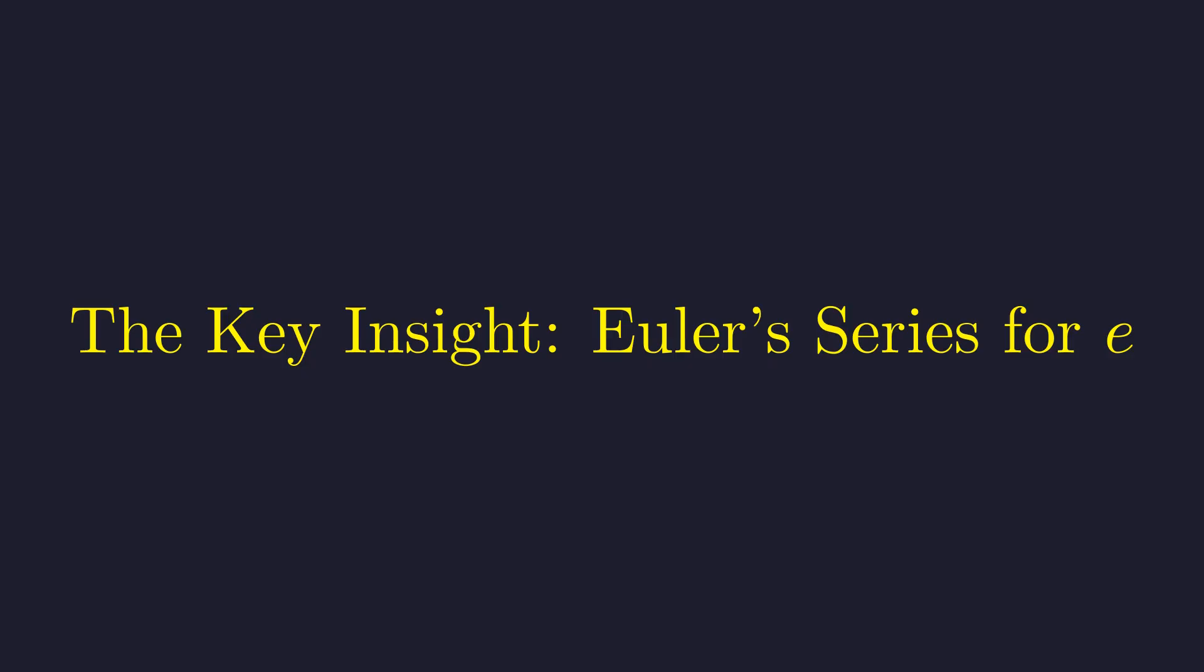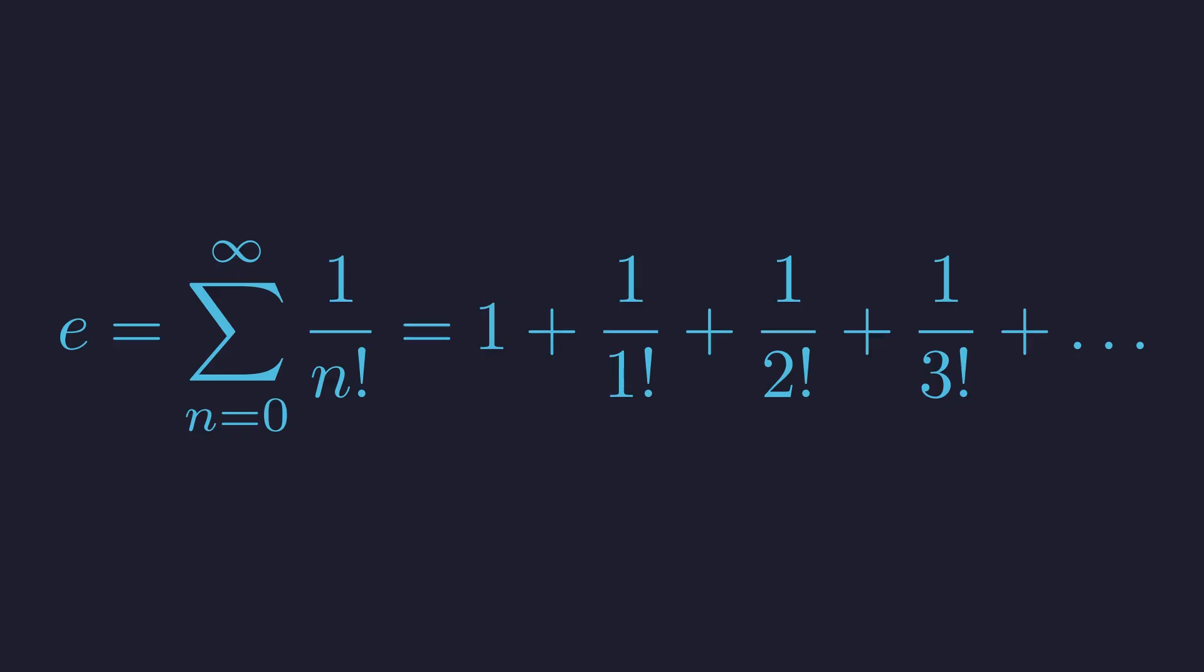The key to this proof comes from a famous series representation of E, discovered by the great mathematician Leonhard Euler. The number E is the sum of the reciprocals of all the factorials: 1 plus 1 over 1 factorial, plus 1 over 2 factorial, and so on, infinitely.